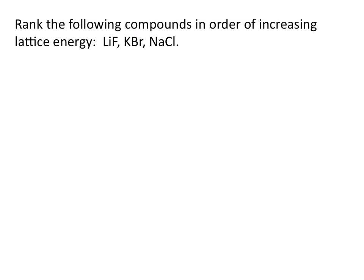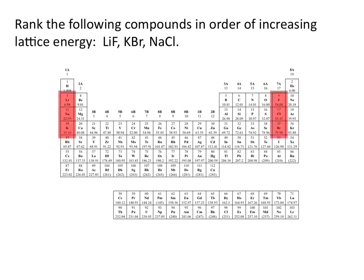Let's look at an example using lattice energies. Rank the following compounds in order of increasing lattice energy. First, let's locate where these elements are on the periodic table. Lithium, potassium, and sodium are all in group 1 of the periodic table, which means they all form ions with a charge of plus 1. Likewise, fluorine, chlorine, and bromine are all in group 7 of the periodic table, which means they all form ions with a charge of negative 1.